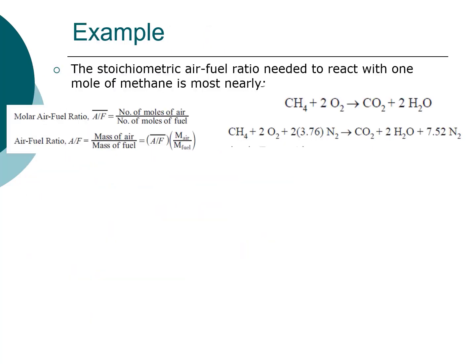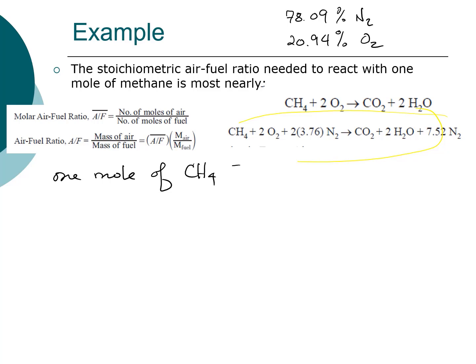In this problem we're asked to determine the stoichiometric air-to-fuel ratio needed to react with one mole of methane. Because we're looking at air, we use the oxidation of methane by oxygen in the presence of nitrogen. The ratio 3.76 is derived from the properties of air, where air contains 78.09% nitrogen and 20.94% oxygen. So for every one mole of methane, we need 2 moles of oxygen and 2 × 3.76 moles of nitrogen.